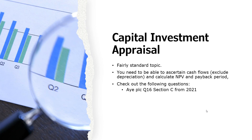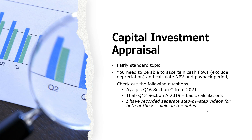Check out the following questions: I've done a video on APLC question 16, section C from 2021 — that was a full capital investment appraisal question. There's also FAB, which was a section A question with some basic calculations on NPV and payback period — I've recorded separate step-by-step videos for both of those and I'll put links in the notes. Have a look back at the old ACCN4 papers — pretty much most sittings of ACCN4 would have had investment appraisal in some form. Those questions tended to be heavier on calculations than section C of the new specification, and the written parts accepted bullet points, so don't use those as a written model.